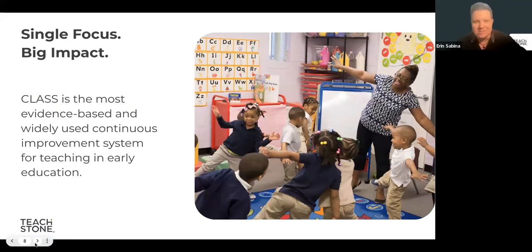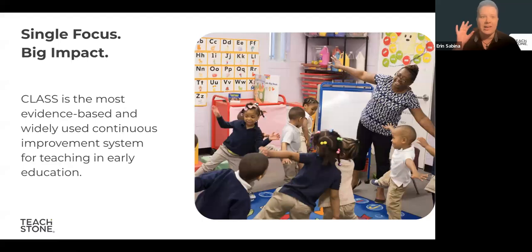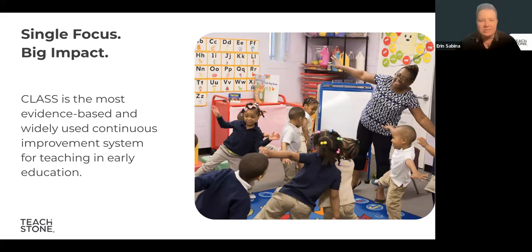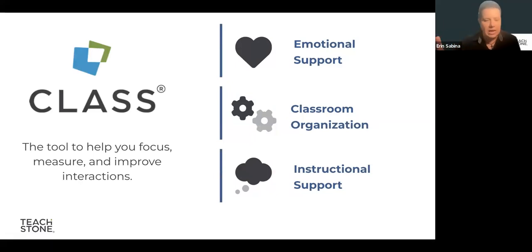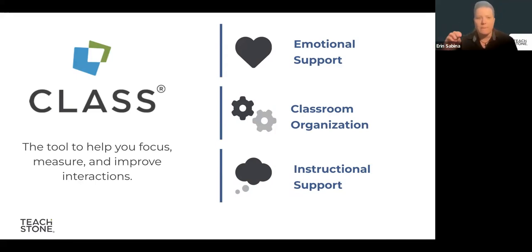CLASS has a single focus: interactions. Interactions are what we feel are the most important aspect of student outcomes. CLASS is the most evidence-based and widely used continuous improvement system for teaching and early education. For pre-K and up — infant-toddler has slightly different domains — the domains for pre-K through grade 12 are Emotional Support, Classroom Organization, and Instructional Support.